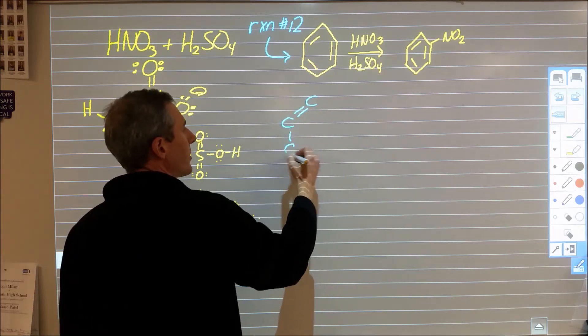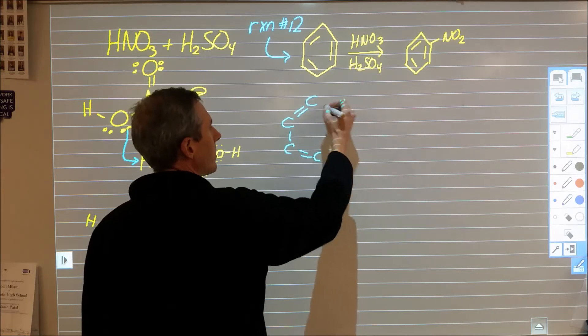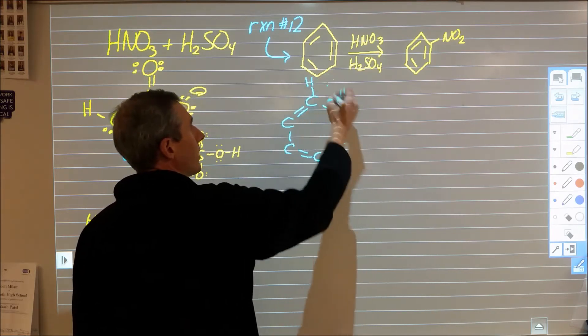Drawing the structure: carbon, carbon with double bond, single bond, double bond, single bond, double bond, single bond, and each one has a hydrogen.